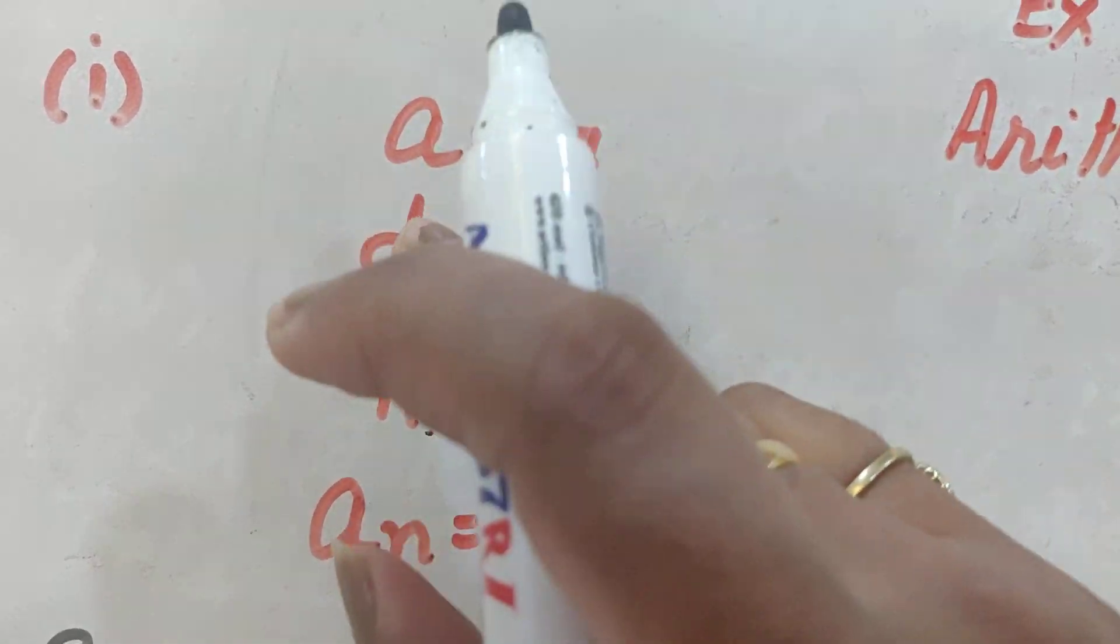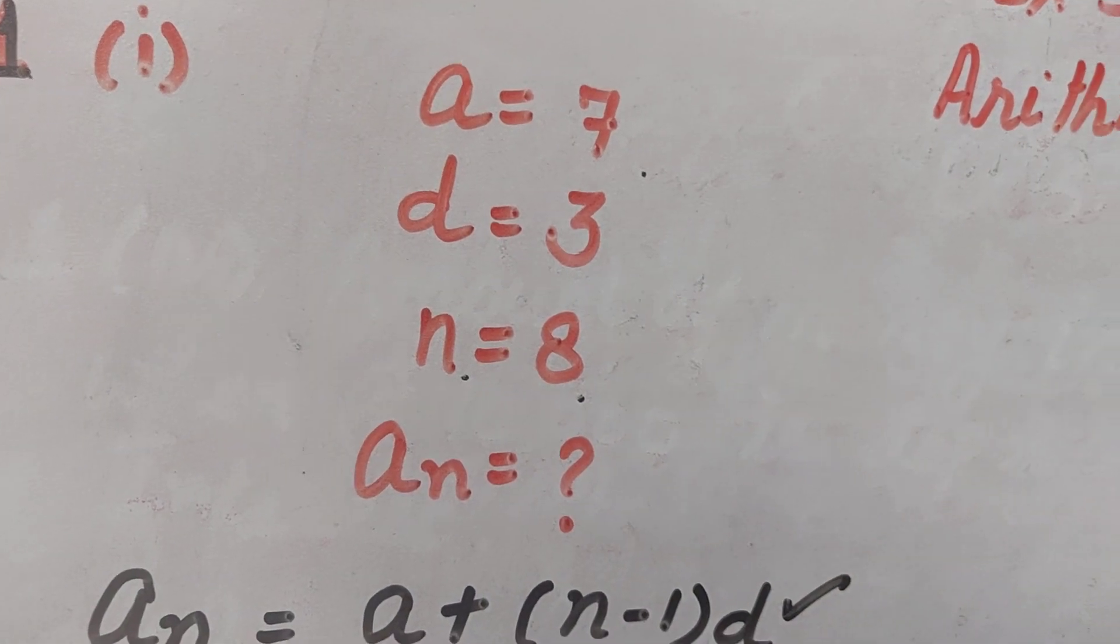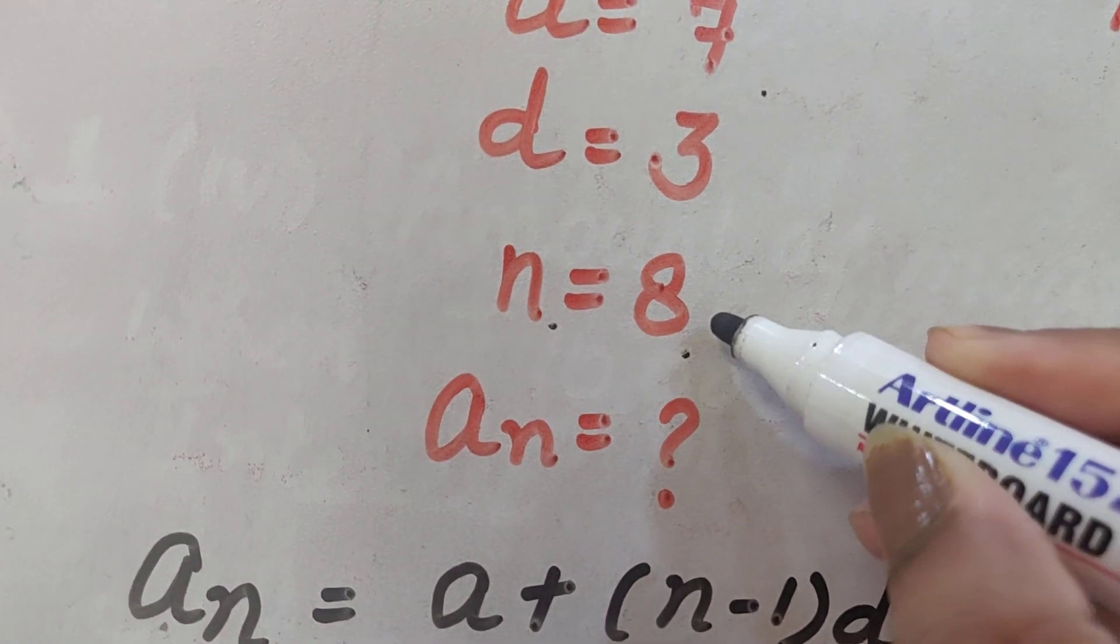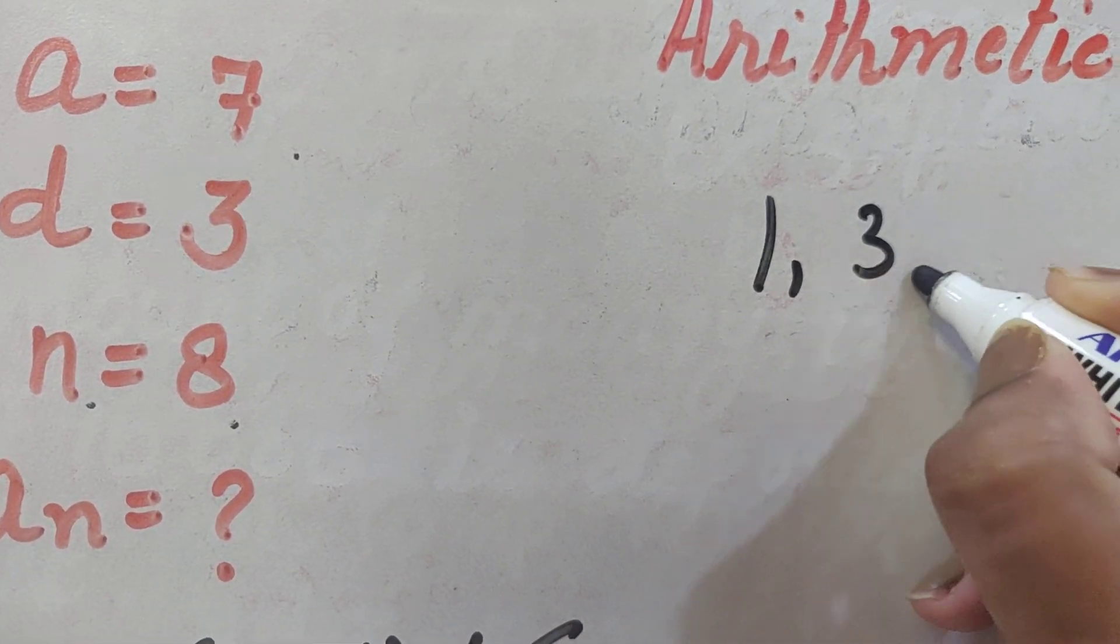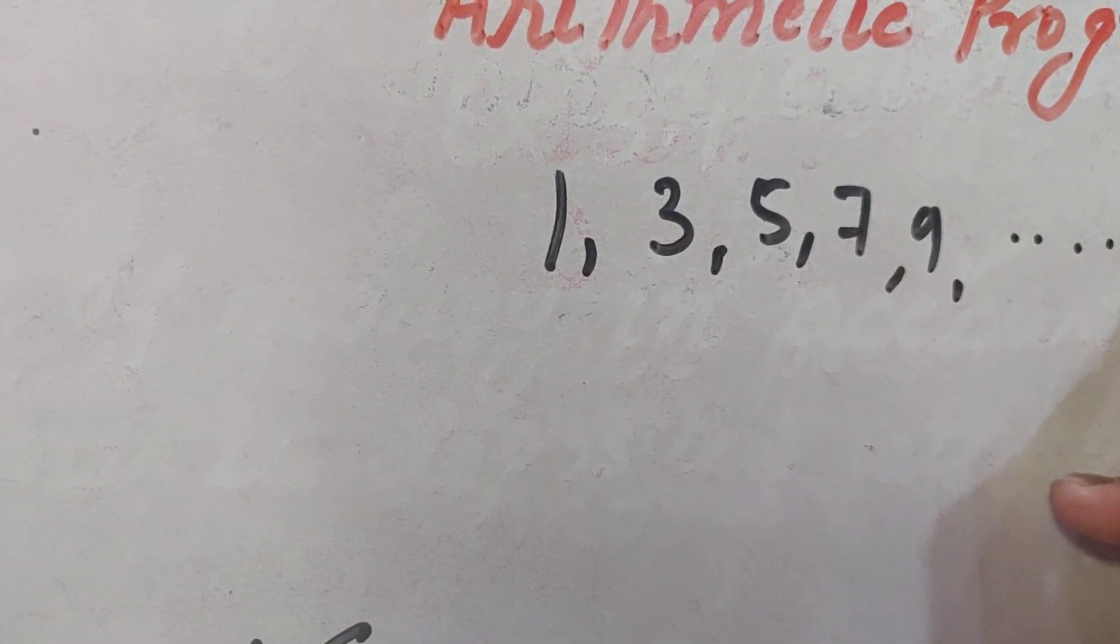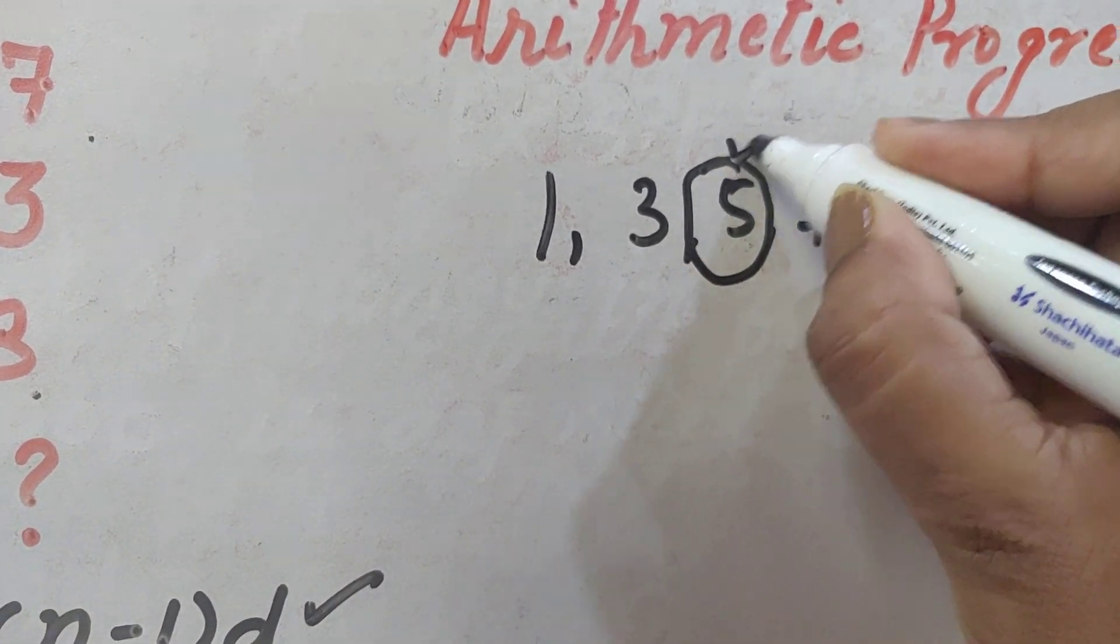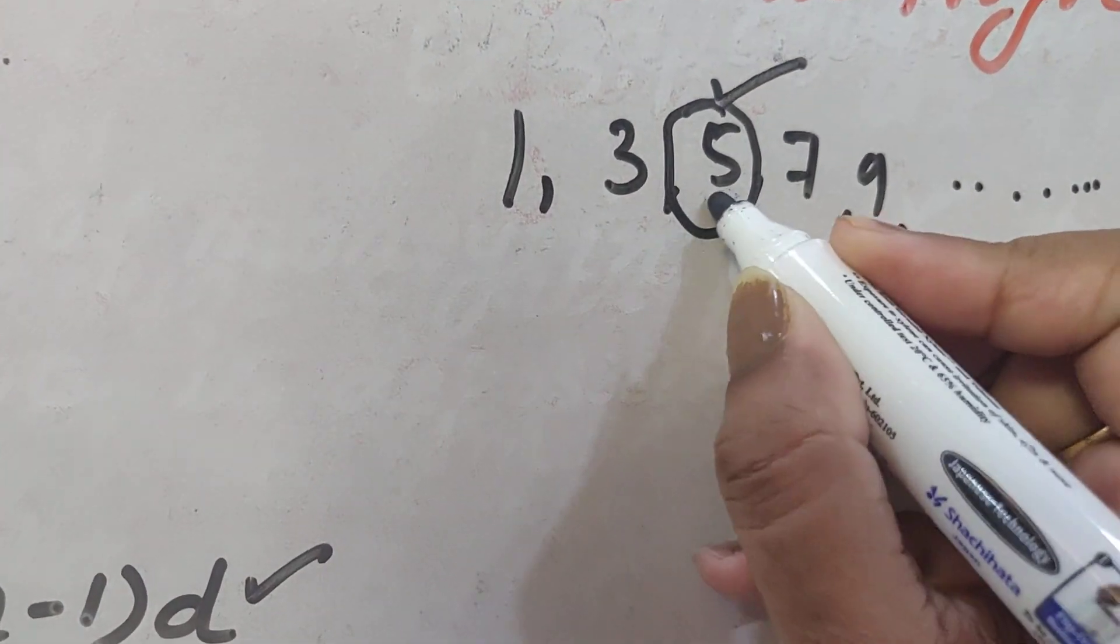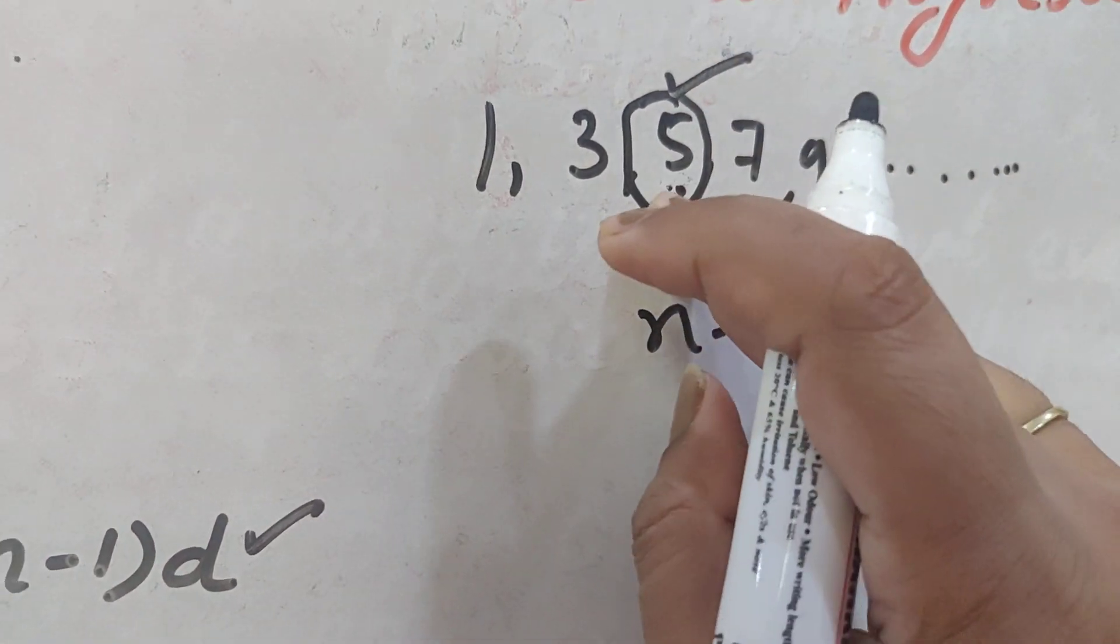A is equal to 7. A means the first term is 7. D is equal to 3. D means the common difference is 3. N is equal to 8. When some AP is written like this, 1, 3, 5, 7, 9 and so on, then let us talk about this term, 5. This is coming at third number.